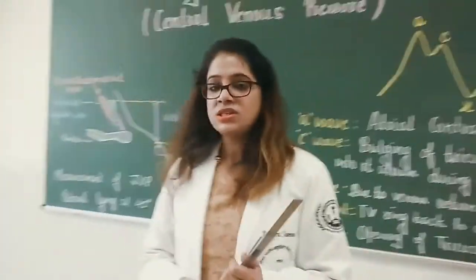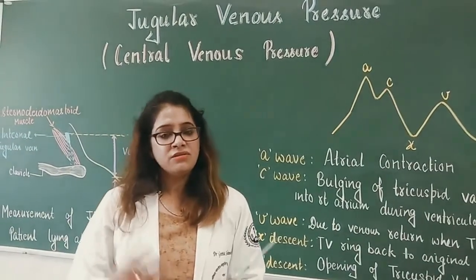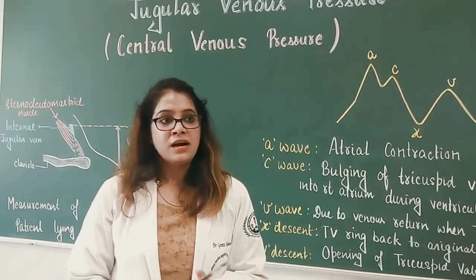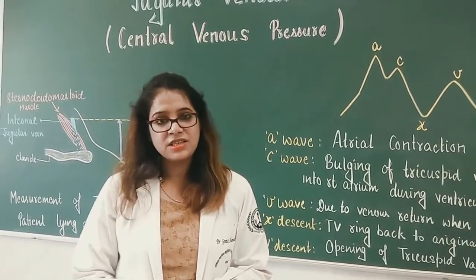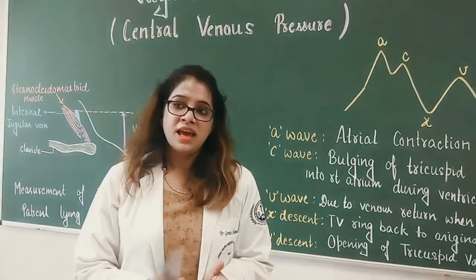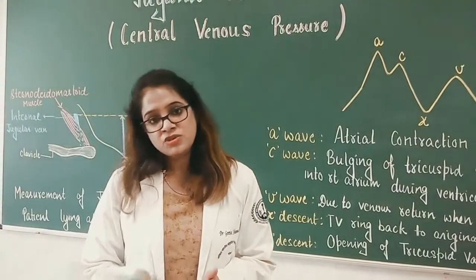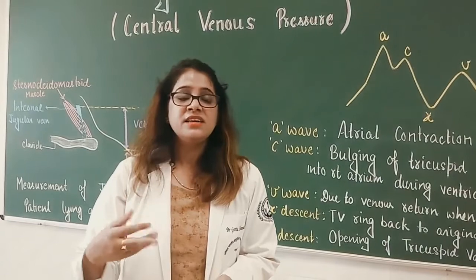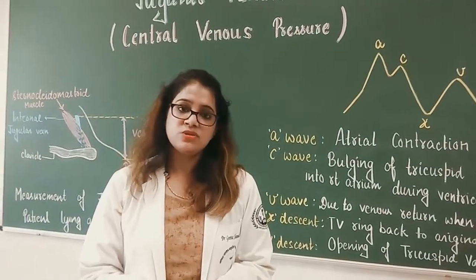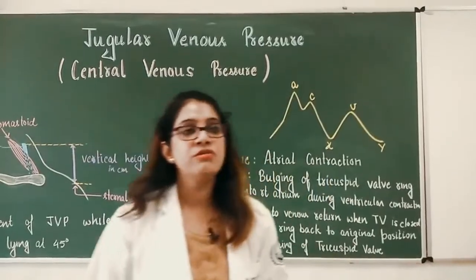The causes of raised central venous pressure include any condition causing right-sided heart failure — such as right ventricular dilatation, or right heart failure due to pulmonary conditions like chronic obstructive pulmonary disease or pulmonary embolism. These lead to right-sided heart failure and increased jugular venous pressure, and only in those cases can we see the jugular waves.